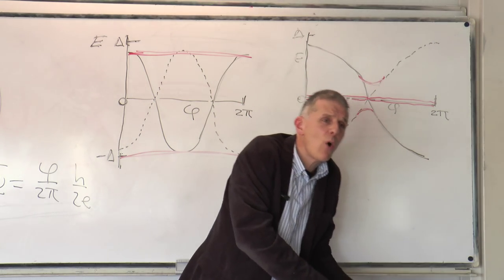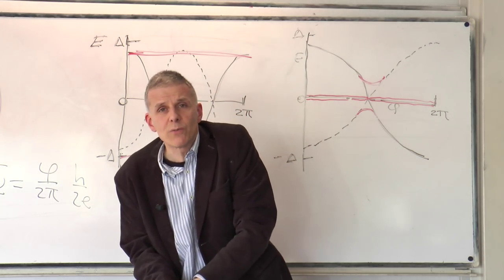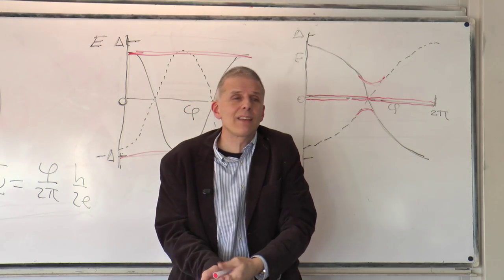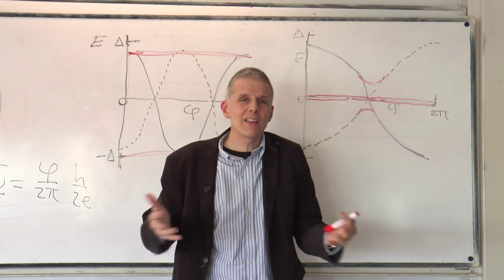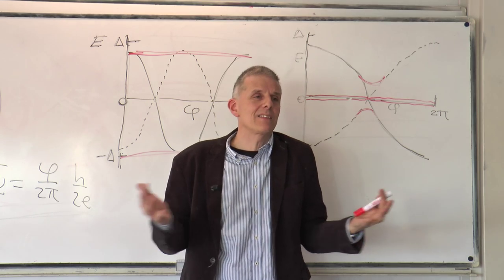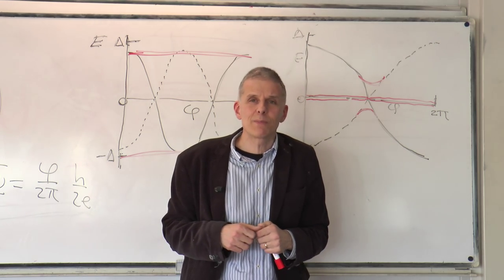And so this is the problem. You cannot do it too slow because of quasi-particle poisoning. You cannot do it too fast because of Landau-Zener tunneling. And this is somehow, okay, it's a bit of a mess. It's not completely hopeless, but it doesn't look too hopeful.